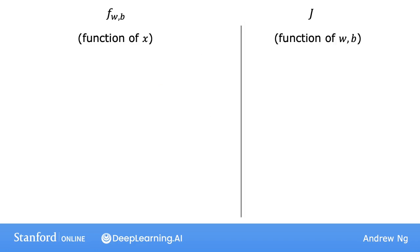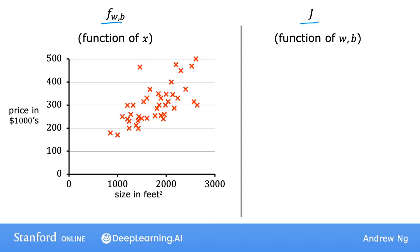Same as last time, we want to get a visual understanding of the model function f of x, shown here on the left, and how it relates to the cost function j of w, b, shown here on the right. Here's a training set of house sizes and prices.